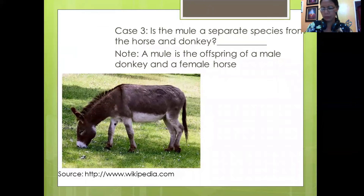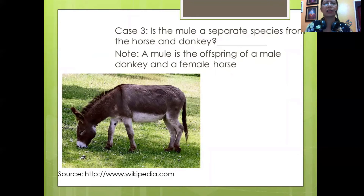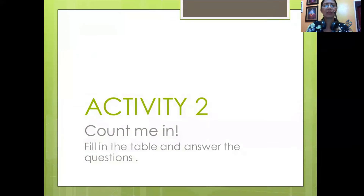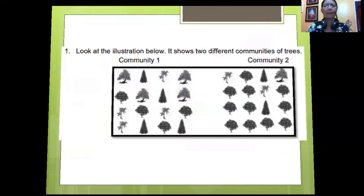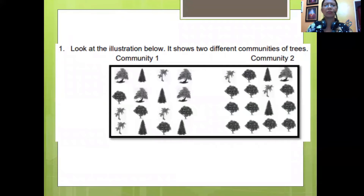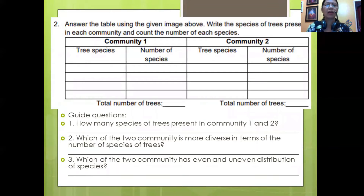Case 3: Is the mule a separate species from the horse and donkey? Species or not? Note: a mule is the offspring of a male donkey and a female horse. For Activity 2, 'Count Me In,' fill in the table and answer the questions. Look at the illustration below. It shows two different communities of trees: Community 1 and Community 2. Answer the table using the given image. Write the species of trees present in each community and count the number of species.